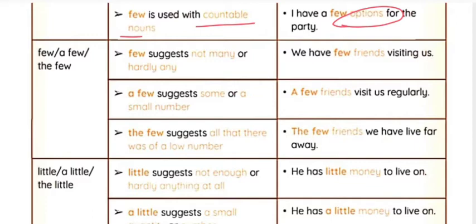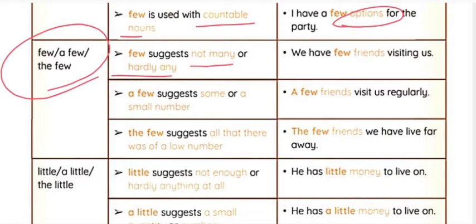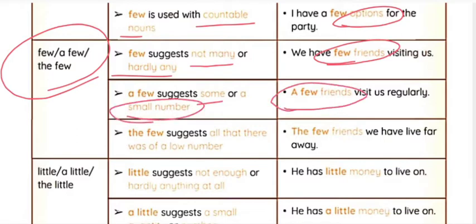There are subtle differences between few, a few, and the few. 'Few' suggests not many or hardly any — for example, 'We have few friends' means we do not have many. 'A few' suggests some or a small number — 'a few friends' means a very small number. 'The few' suggests all that there was of a low number — for example, 'The few friends we have live far away.'